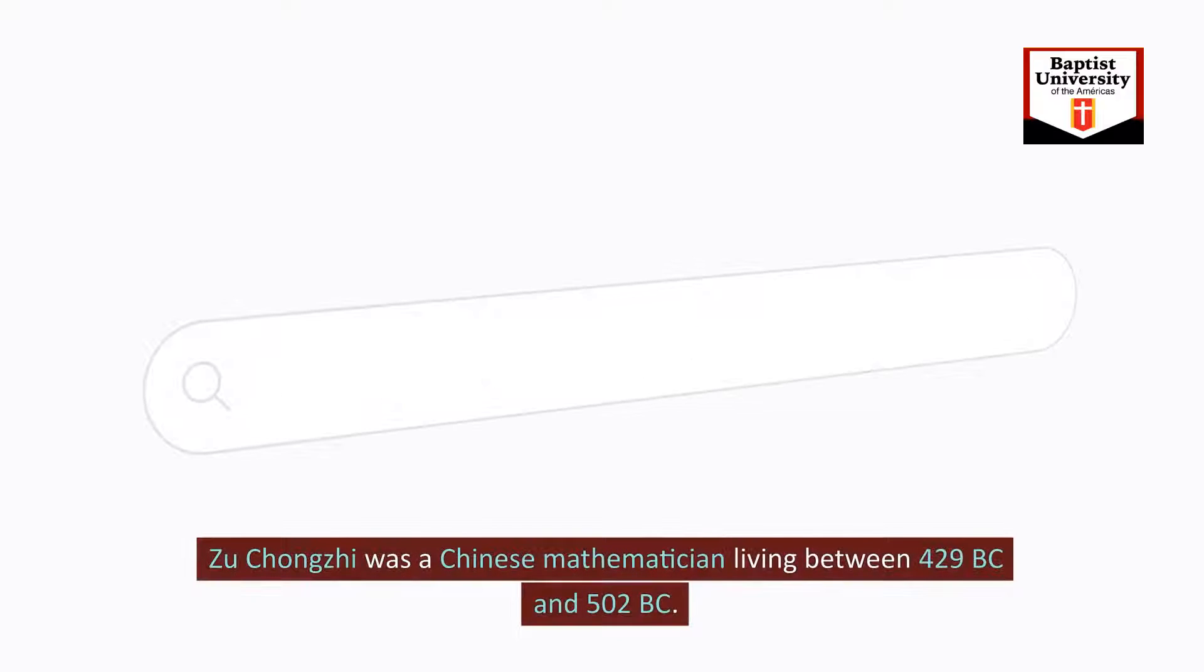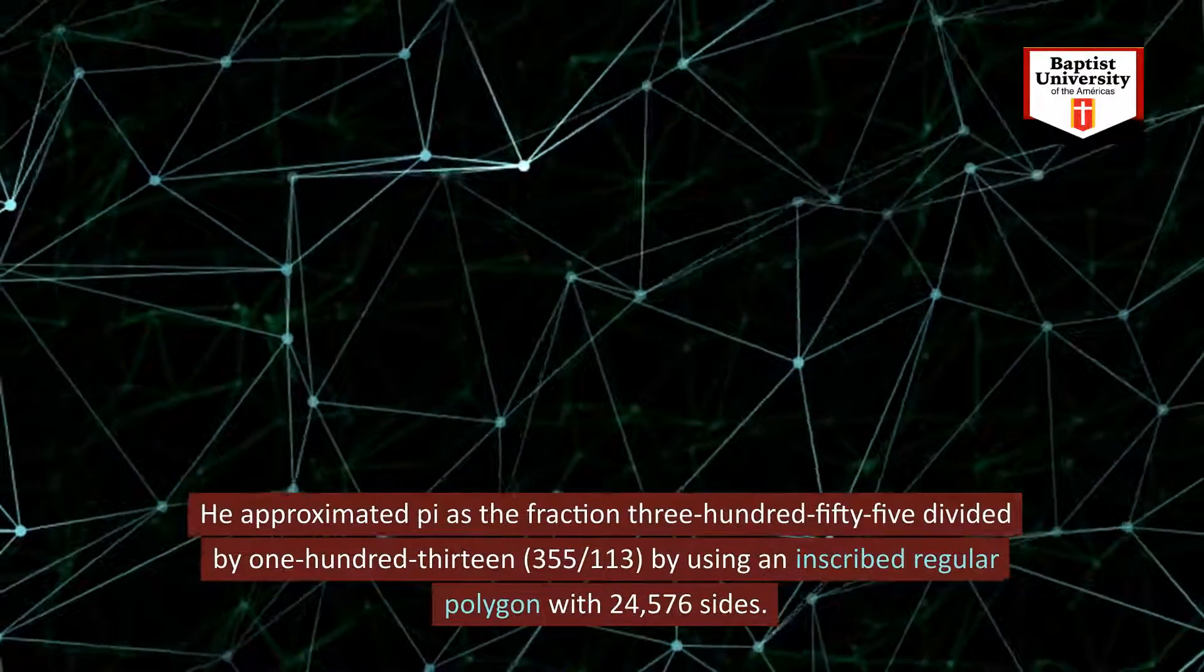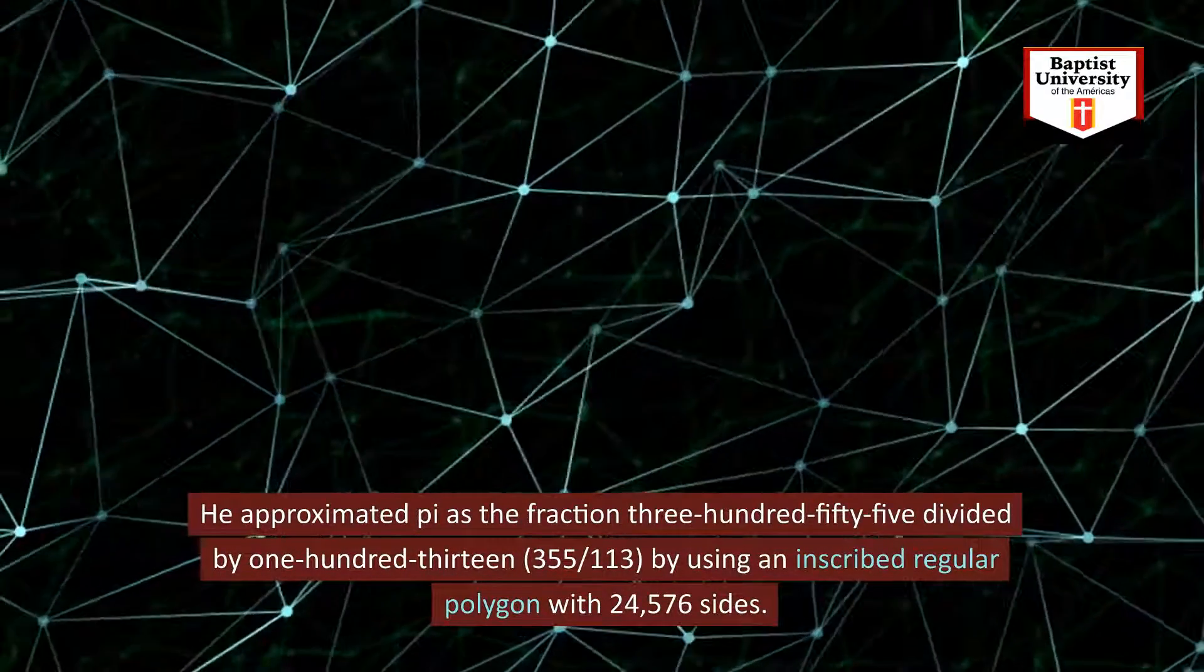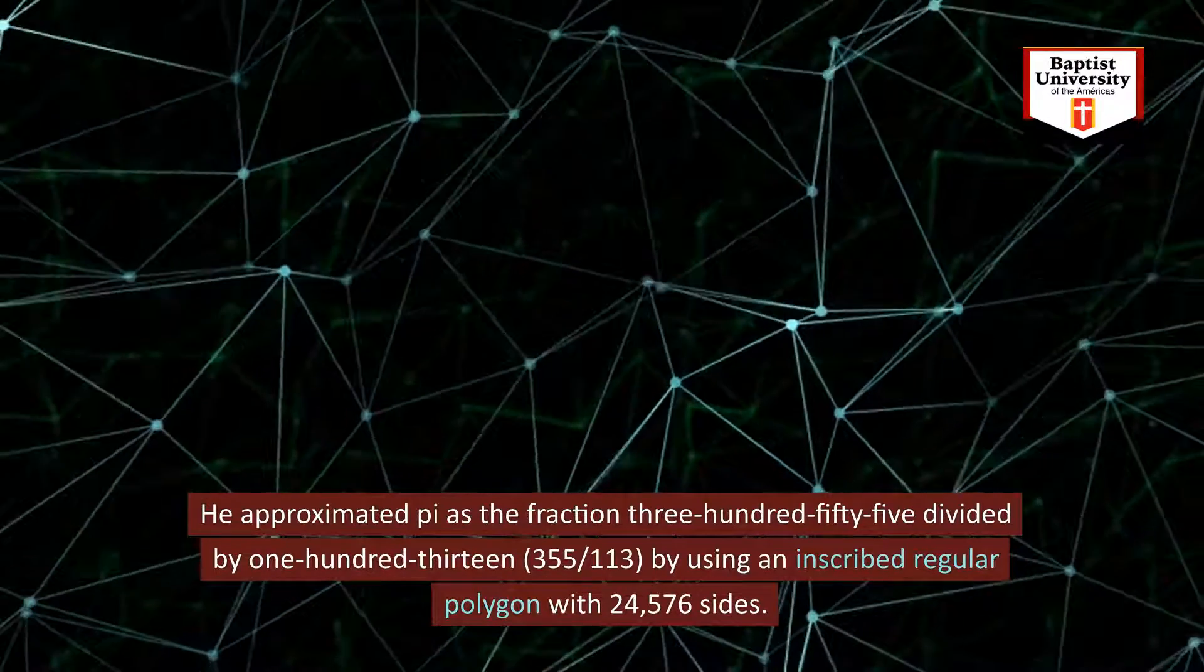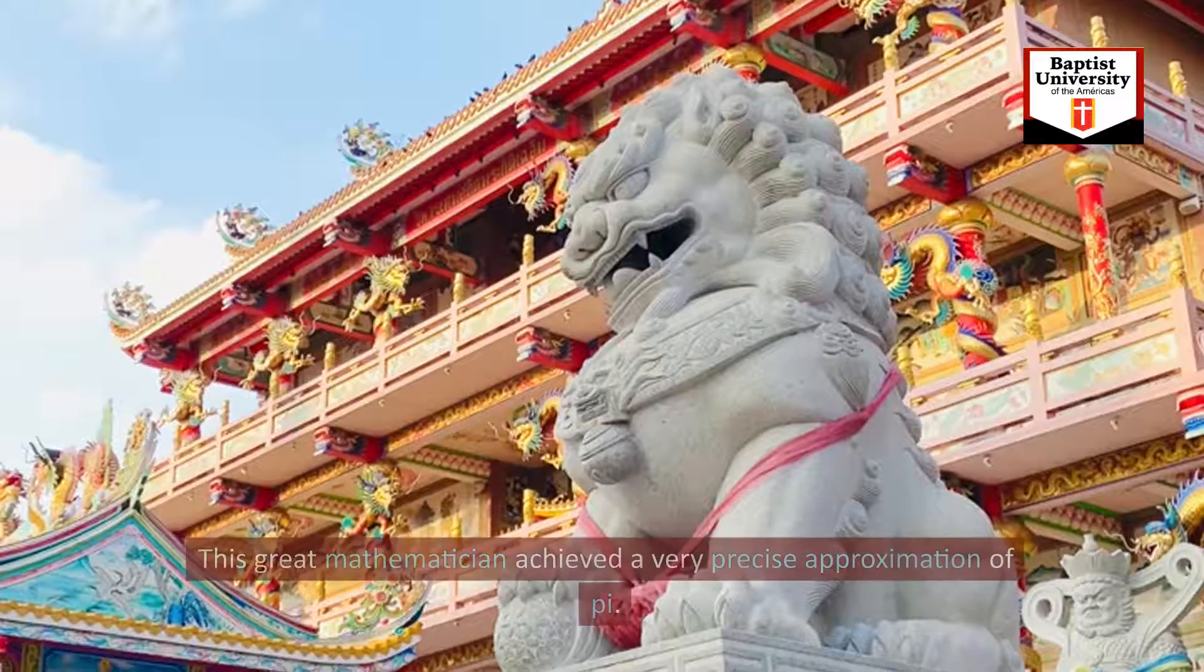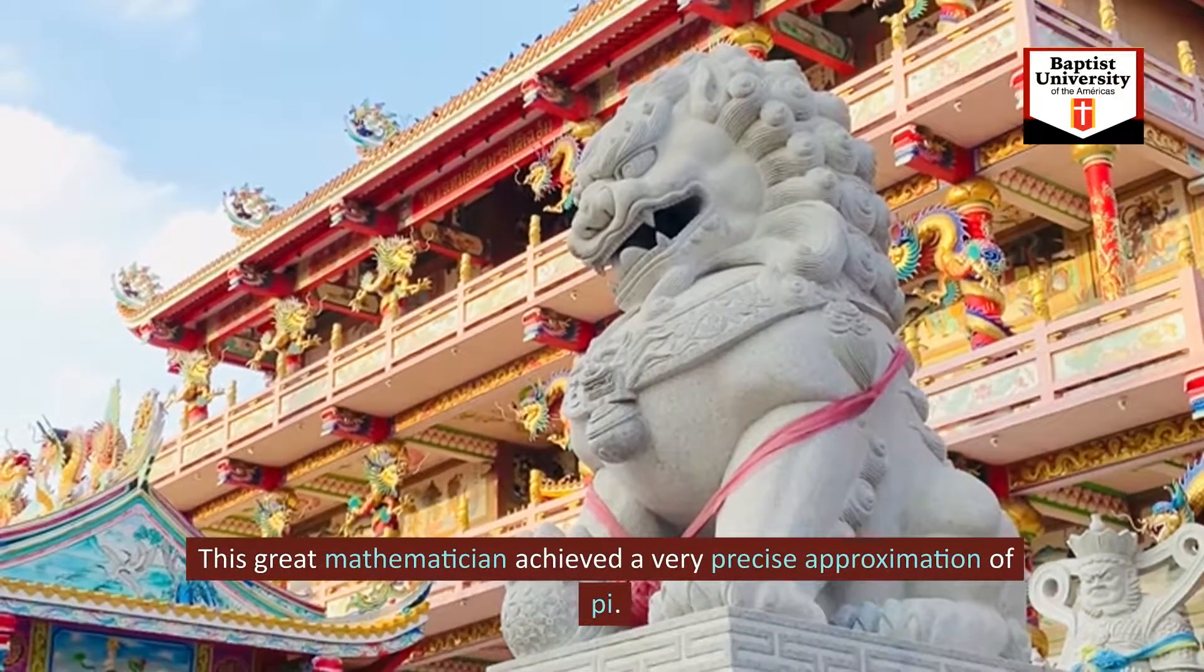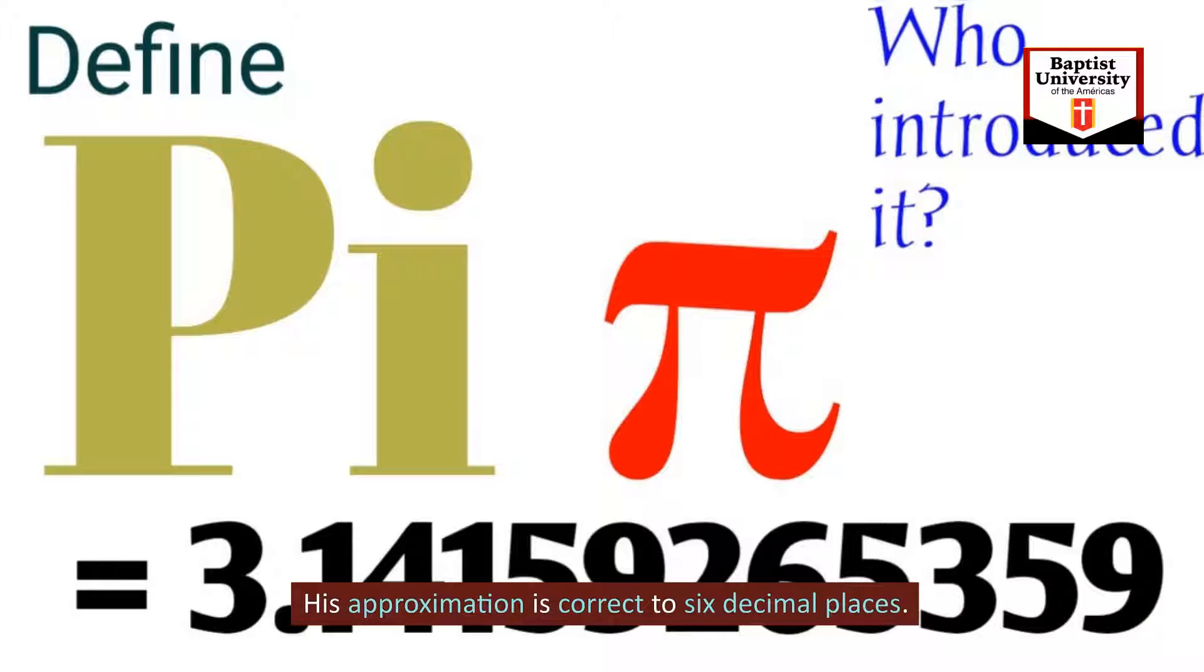Zhu Chongji was a Chinese mathematician living between 429 BC and 502 BC. He approximated pi as the fraction 355 divided by 113 by using an inscribed regular polygon with 24,576 sides. This great mathematician achieved a very precise approximation of pi. His approximation is correct to six decimal places.